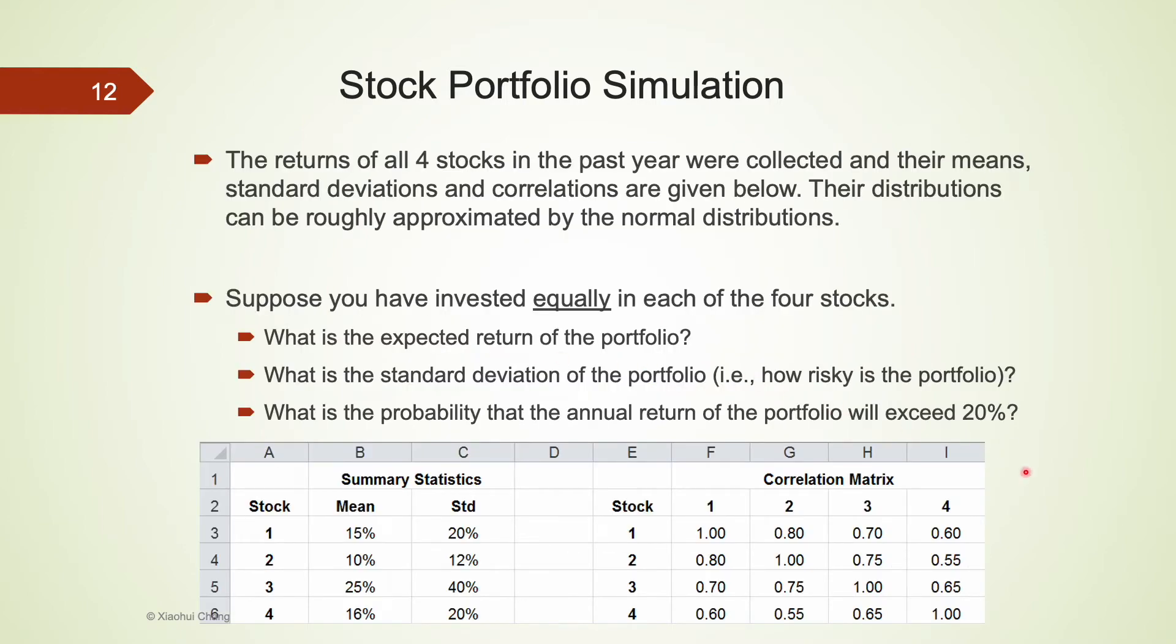After learning about risk-call-mat, we can revisit the questions. Suppose that we have the past return data on these four stocks, including their means, their standard deviations, and their correlations. If we invest equally in these stocks, what is the expected return of the portfolio? How risky is the portfolio? And what is the chance that the return of this portfolio exceeds 20%?